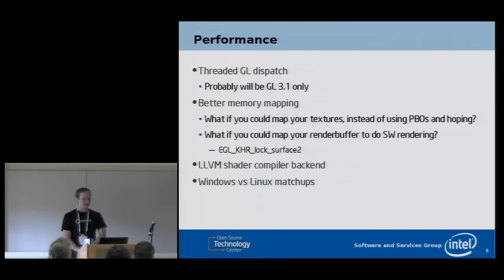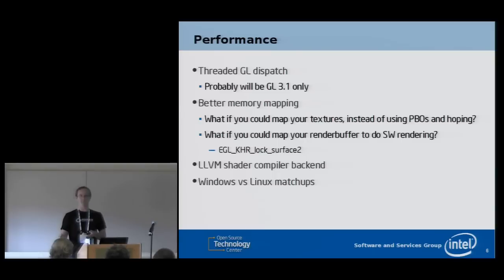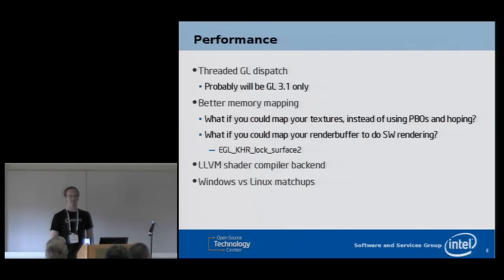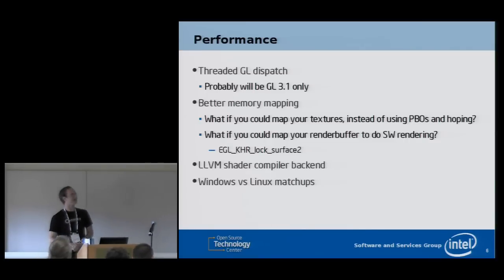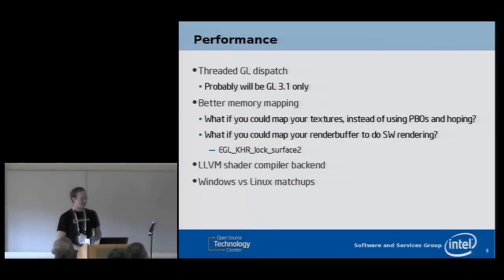Another hot performance topic is better memory mapping, which is interesting for GStreamer. Right now if you want to upload textures — say your video frames — you can either pass a pointer to memory to GL TexImage2D and it mem-copies into GPU memory, or you can make a pixel buffer object, map it, store your data there, and then call GL TexImage2D from that buffer object. If the buffer object contains data in the right format with the right stride and you don't reuse it too soon, you might get zero-copy texturing. However, the driver has no way to tell you what the stride or format should be. So right now streaming texture data is pretty unpleasant.